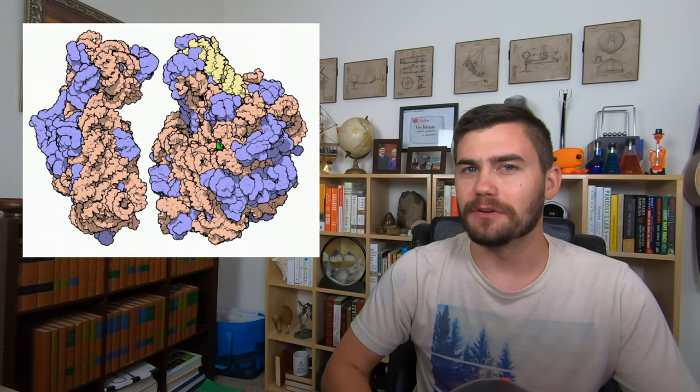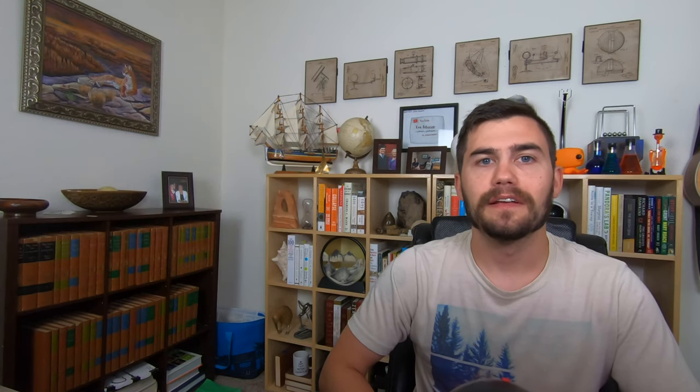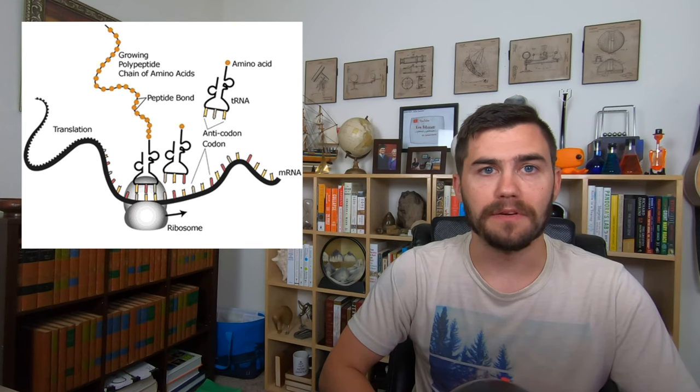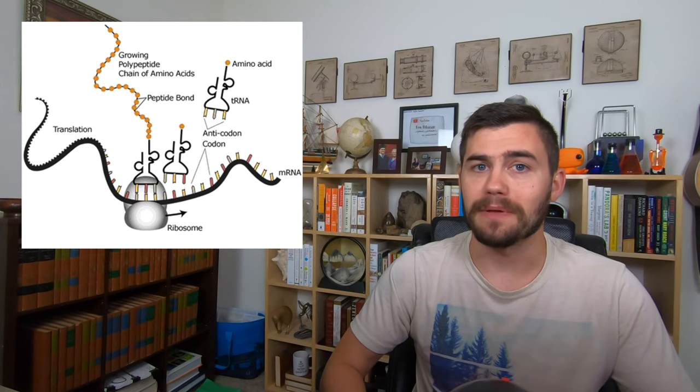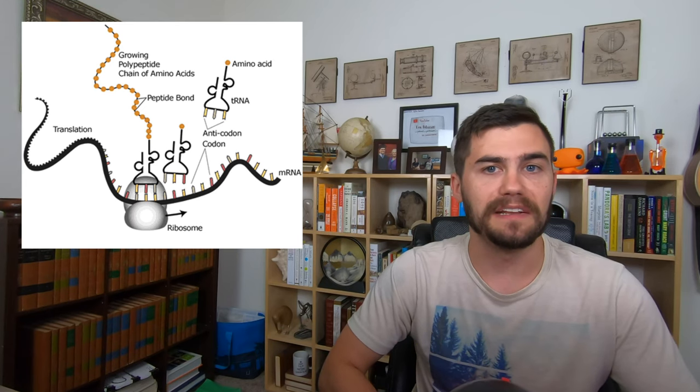Ribosomes are also made of two subunits, simply called the large and small subunit. The messenger RNA is fed through the ribosome between the large and small subunits, and the code is read piece by piece, and one at a time amino acids come in and the protein is assembled.